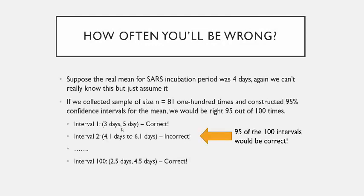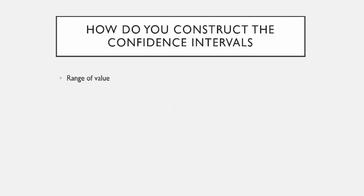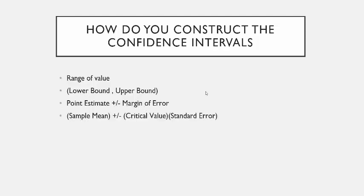There's an actual mathematical formula for constructing these confidence intervals. These confidence intervals are a range of values with a lower bound and an upper bound. You start by taking the point estimate and then add something to get the upper bound and subtract something to get the lower bound — that is called the margin of error. The margin of error is made up of two components: a critical value and a standard error, which we covered in the previous section on sampling distributions.